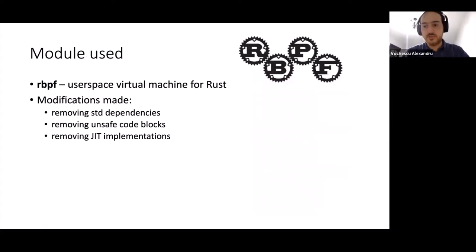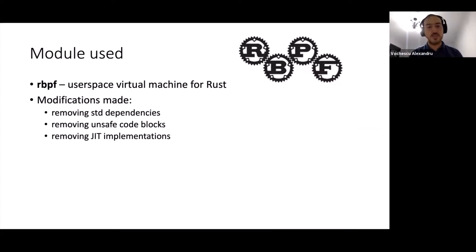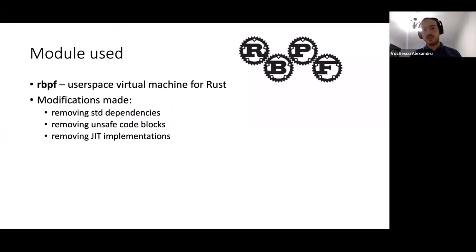What we used to implement eBPF inside the capsule was the rbpf module — a user space virtual machine for Rust — to which we had to make several modifications. Since this is a user space module, it has many standard library dependencies that cannot exist inside an operating system with no such dependencies. First, we had to remove all standard library dependencies such as Vec. Then we had to remove unsafe code blocks, since inside capsules we cannot have unsafe code. Finally, we removed the just-in-time compiler implementations, which are not a needed feature inside TalkOS.